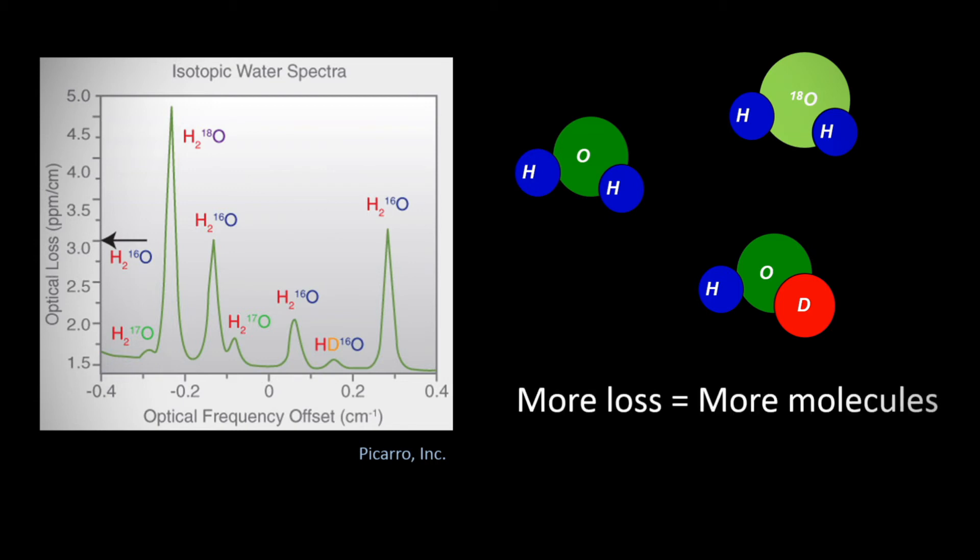Importantly the amount of absorption is associated with the number of molecules of that particular isotopolog. So by measuring the spectrum we can then infer the isotope amount, the isotopolog amount and ultimately the isotope ratios.